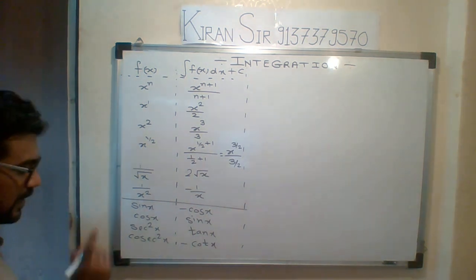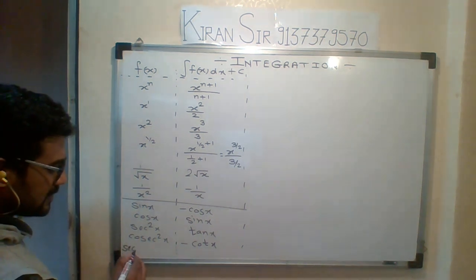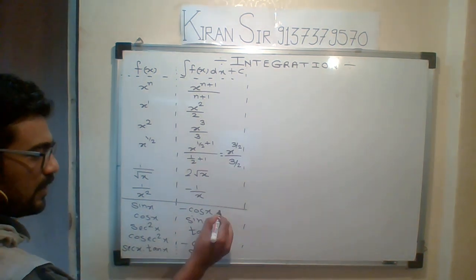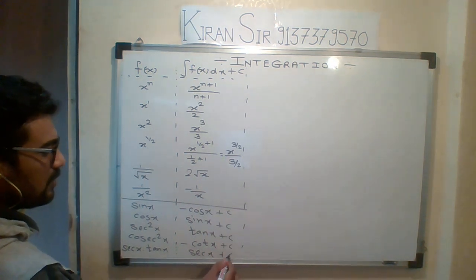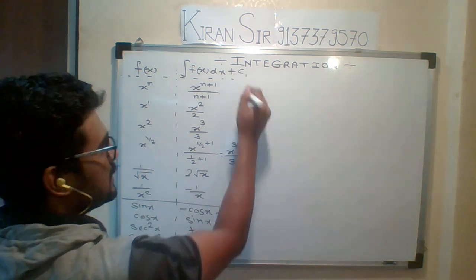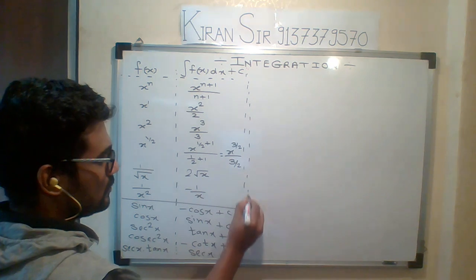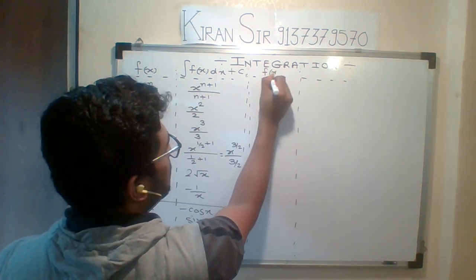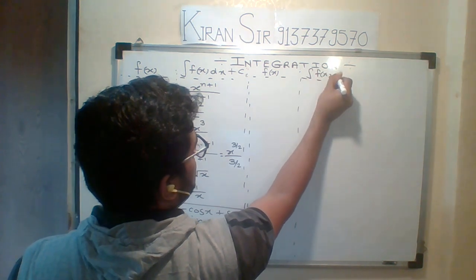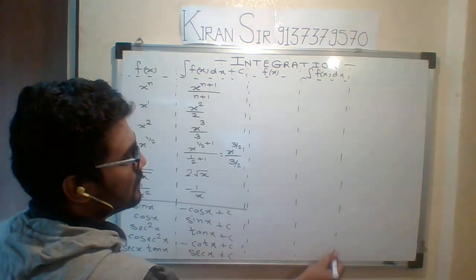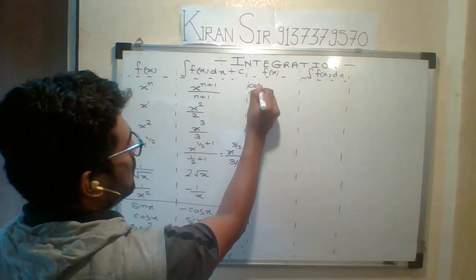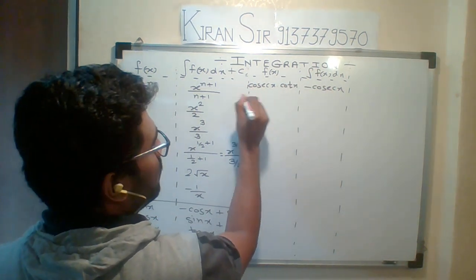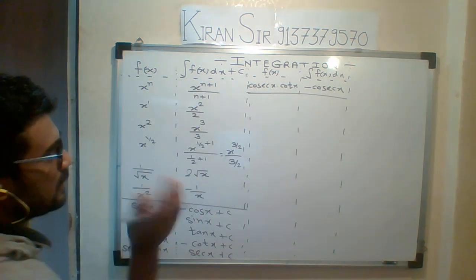I will write one more formula. Integration of sec x into tan x is sec x. Remember this particular formula — definitely you have to write plus C. Now the last formula in the trig section: integration of cosec x into cot x is minus cosec x. Remember this entire trig section before we move to the next.